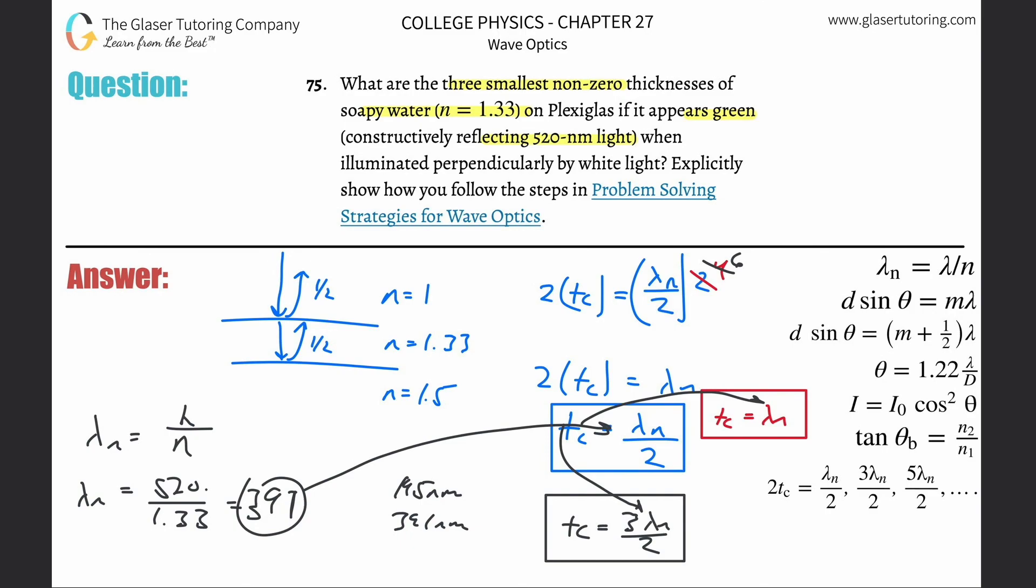So you're going to take that value then of about 391, and then we're going to multiply that by three over two. So that's about 586 nanometers. And that would be the answer for the black one.